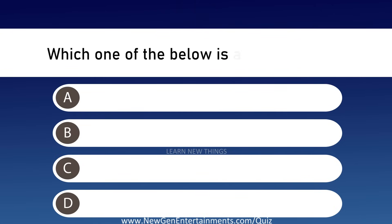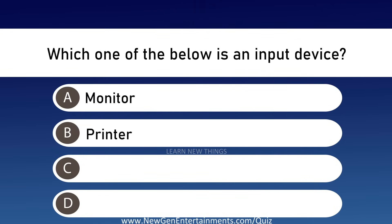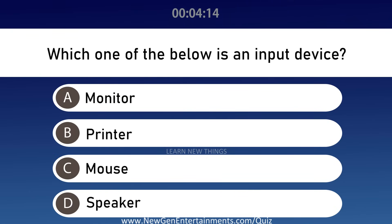Which one of the below is an input device? Options are A: Monitor, B: Printer, C: Mouse, and D: Speaker. Answer is Option C, Mouse.